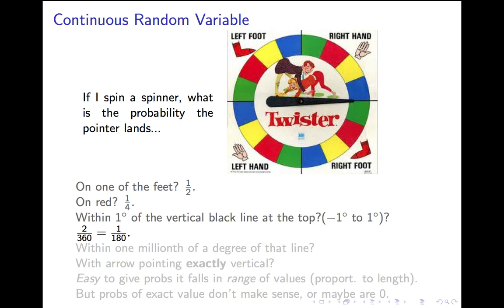But it's not just made out of 360 degrees. It's made out of 360 million millionths of a degree. So what's the probability that you get within one millionth of a degree of that line? It's going to be two out of 360 million. It's going to be a tiny number.